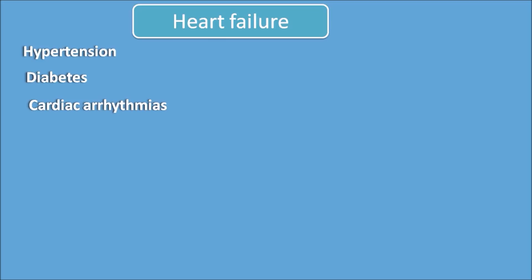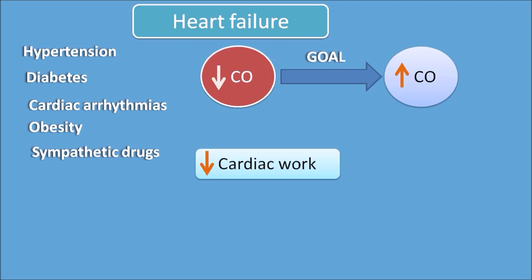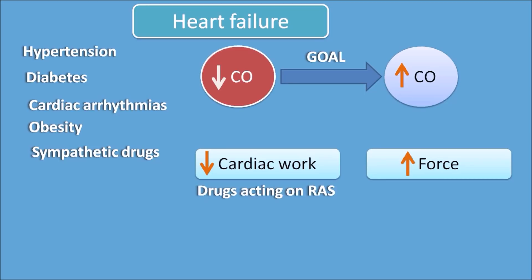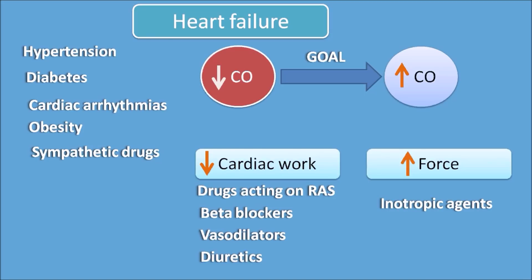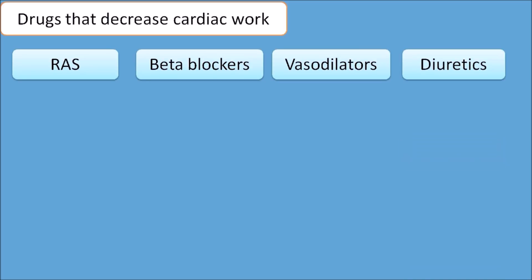Risk factors for heart failure include hypertension, diabetes, cardiac arrhythmias, obesity, and sympathomimetic drug use. In heart failure, there is decreased cardiac output, so the goal is to increase cardiac output — either by decreasing cardiac work or by increasing the force of contraction. Cardiac work can be decreased by drugs acting on the renin-angiotensin system, beta blockers, vasodilators, and diuretics.